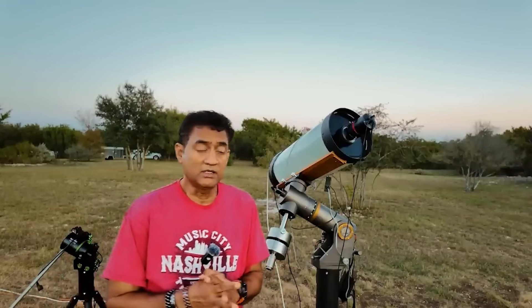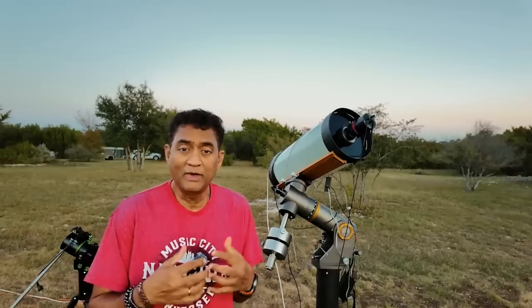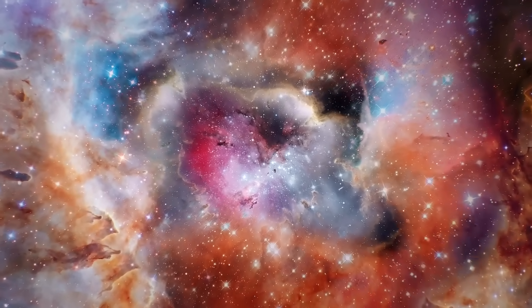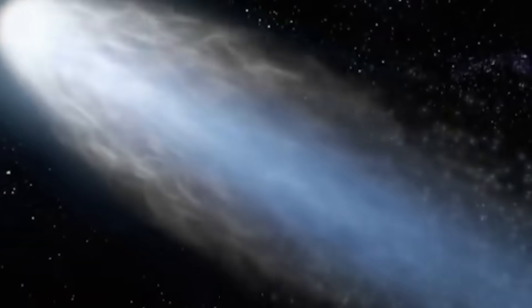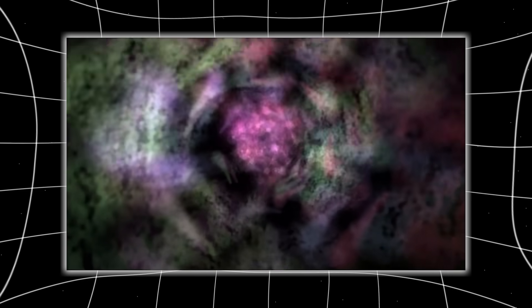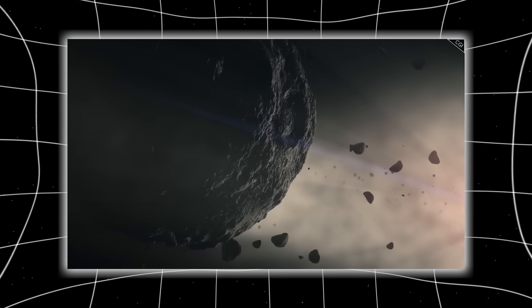As Ray continues capturing the comet night after night, something subtle yet profound begins to emerge in his data, because the closer Three-Eye Atlas gets to Earth, the more pronounced its internal structure becomes through the glow of its coma, almost as if the comet were gradually peeling back its own layers for us to study. Ray mentions that what initially looked like a diffuse, uniform blur is now showing distinct geometry, with the pointed central region growing sharper and more defined with each observation.